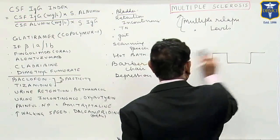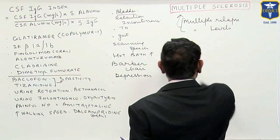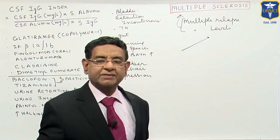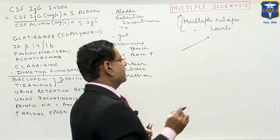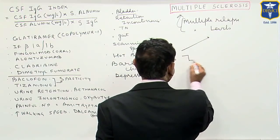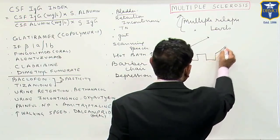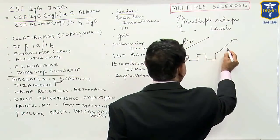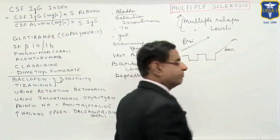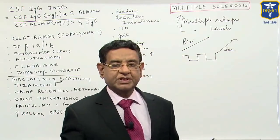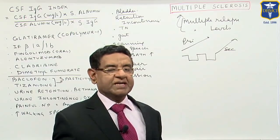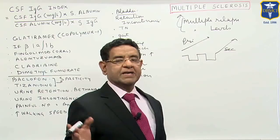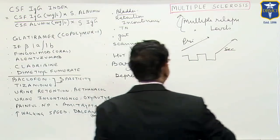Sometimes the patient may have a progressive disease from the very beginning — this is primary progressive. Sometimes the patient initially has relapse-remission but then starts to progress again — this is secondary progressive disease. Classically, though, multiple sclerosis is characterized by multiple relapses and multiple levels.